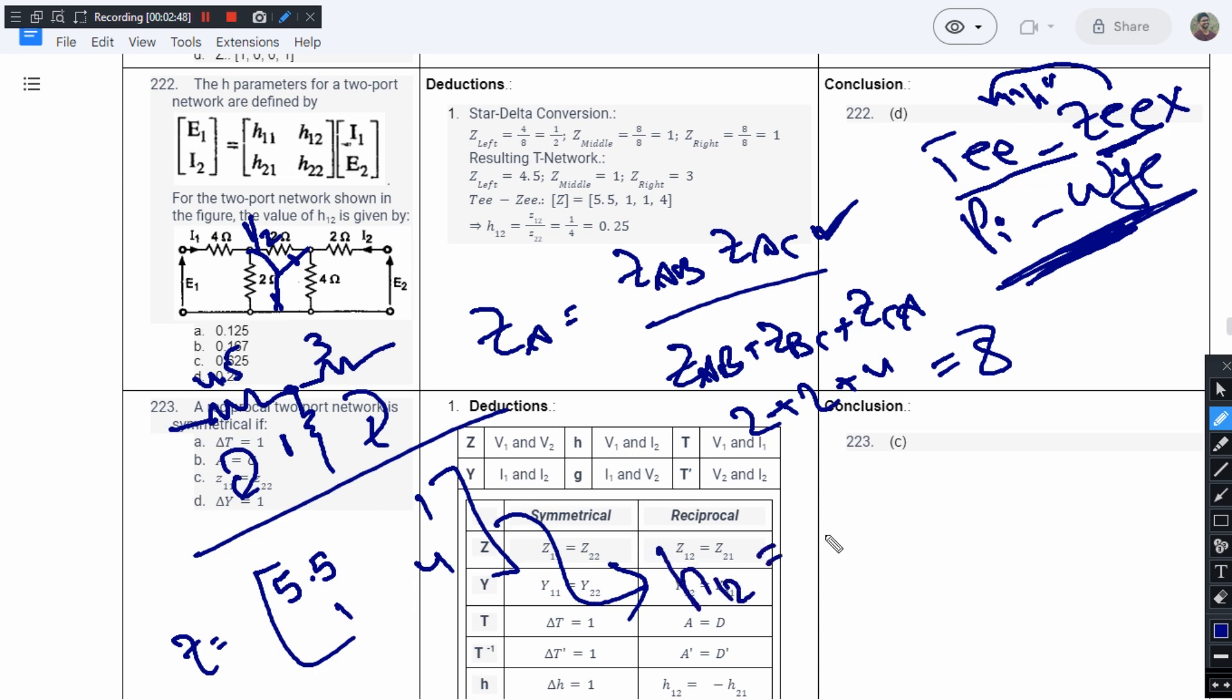So here the value of H12 has been asked. The value of H12 equals Z12 divided by Z22. Here the value of H12 is 1 divided by H22, which is 4. So we have 1/4, which equals 0.25.